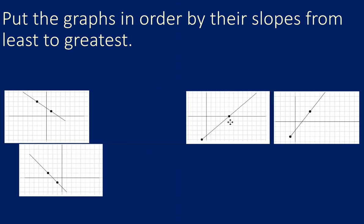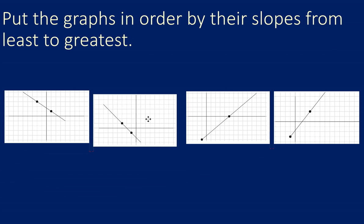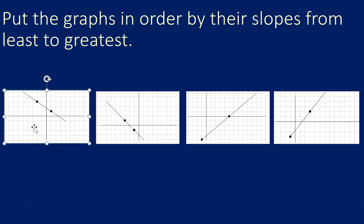All right, and now we just have to decide which one of these negative lines should go on the left and one should go on the right. Well now I'm thinking about steepness so I'm imagining myself walking down this line and thinking about how steep it would feel. Would I feel more like I was going to fall forward if I was walking on this line or would I feel more like that if I was walking on this line?